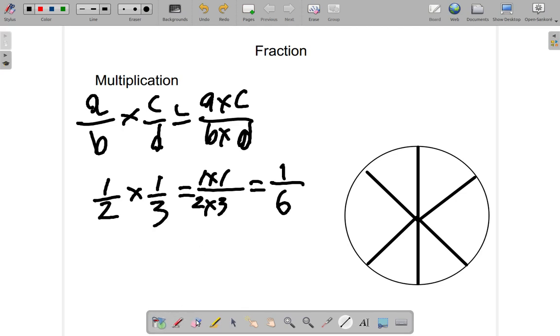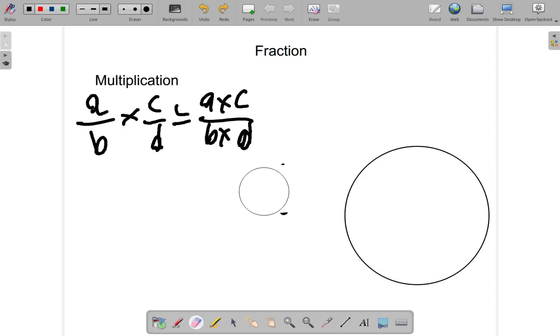We could look at another example. Let's say you have a half multiplied by two thirds. That gives you two over six. Two sixes, which is the same as one third, but let's keep it as two sixes for now, just to discuss the principles behind it.